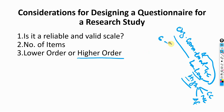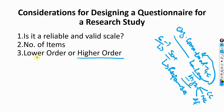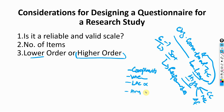If you have a complex model with 6 to 7 variables being assessed for their interrelationship, taking higher order constructs would mean you have 50 plus items, and that creates problems with generating enough responses. However, this is purely subjective and depends on model complexity, the number of variables, and whether lower order constructs are even available. For example, CSR is one scale that primarily has sub-dimensions and is typically measured at the higher order level.